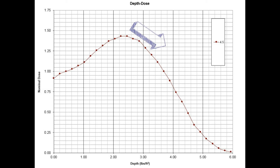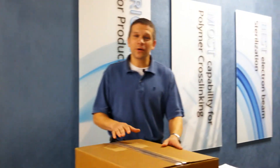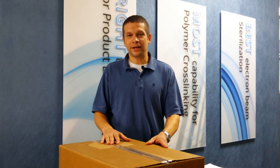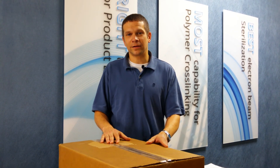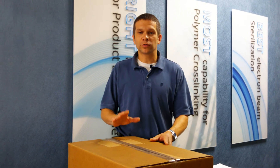After this point, the dose starts to decrease and tails off just before the 3 pounds per square foot depth. So now we know that this product is a good candidate for single-sided EB processing. Next, we'll verify it by doing a dose distribution study, but we'll talk about that at another time. But what happens if your product is too dense for single-sided processing? Join us next time as we explore combining those depth curves for two-sided processing.